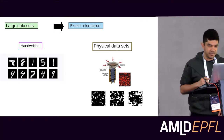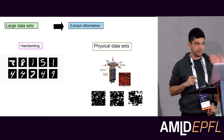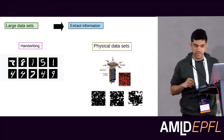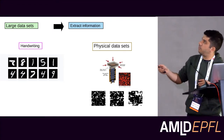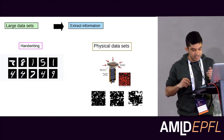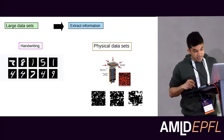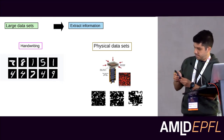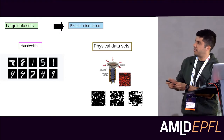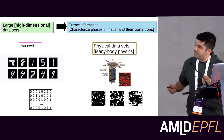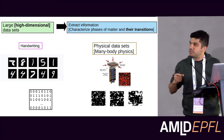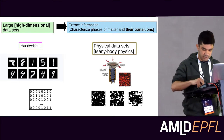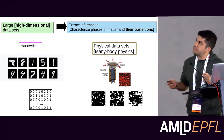The idea of this work fits well in this session. We want to analyze large physical data sets with the goal of extracting useful information. Specifically, given a data set — say a table of zeros and ones — we want to characterize phases of matter and their transitions. This was already well motivated in the previous talks.